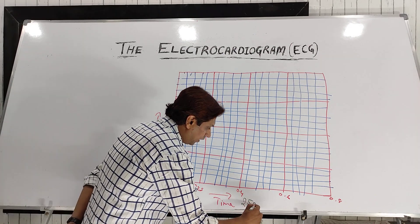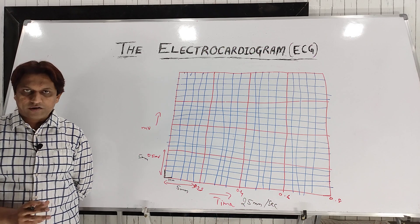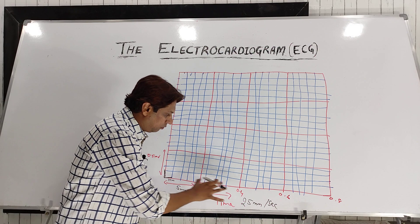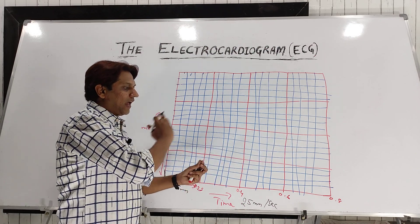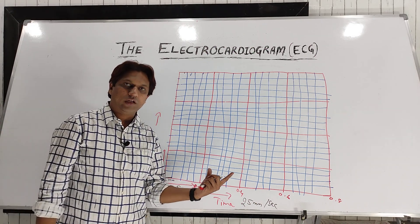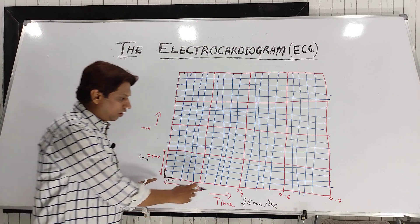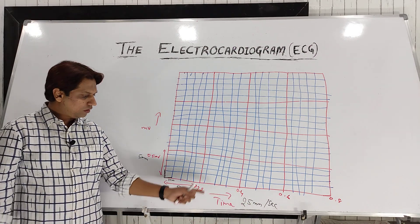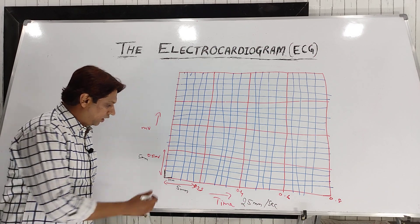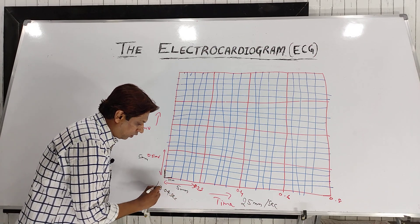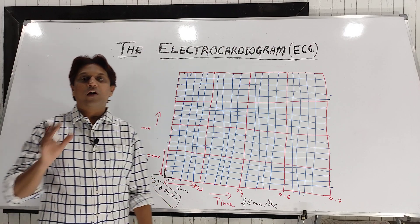The speed of an ECG paper is kept at 25 millimeters per second, which is the standard speed in most ECG machines. At 25 mm/sec, 5 millimeters — which is one bigger square — is traveled in 0.2 seconds. That is how we get the time duration of 0.2 seconds for the bigger square. If we divide 0.2 seconds by 5, we get 0.04 seconds. So one small square of 1 millimeter represents 0.04 seconds. This is very important to remember.